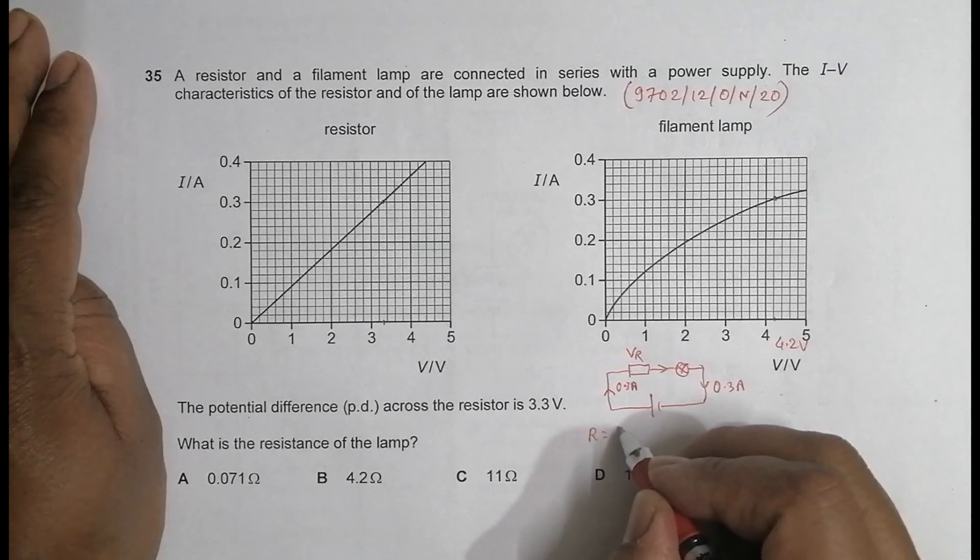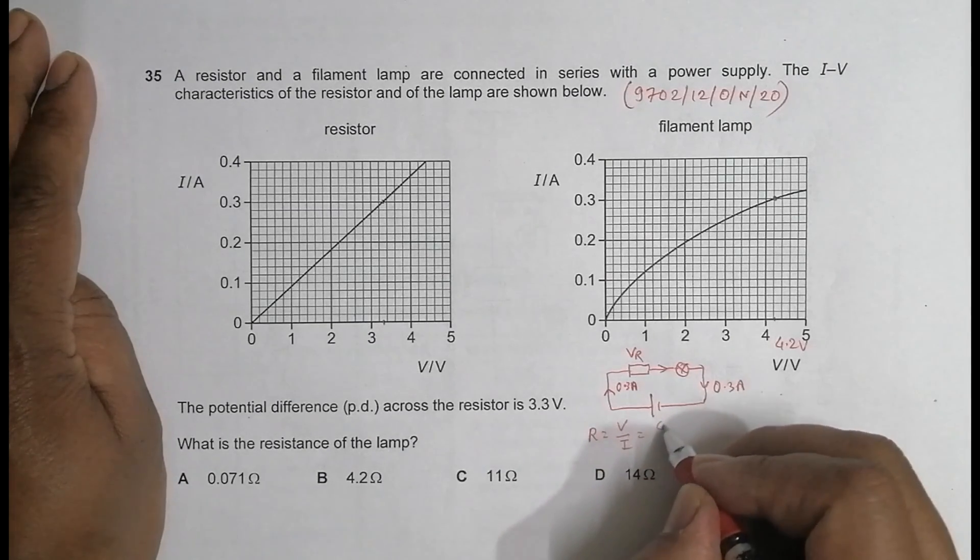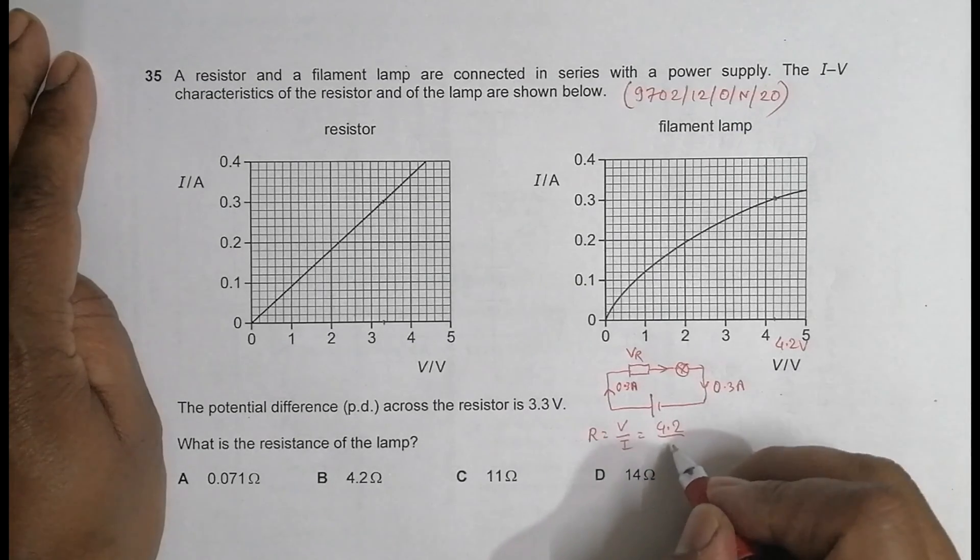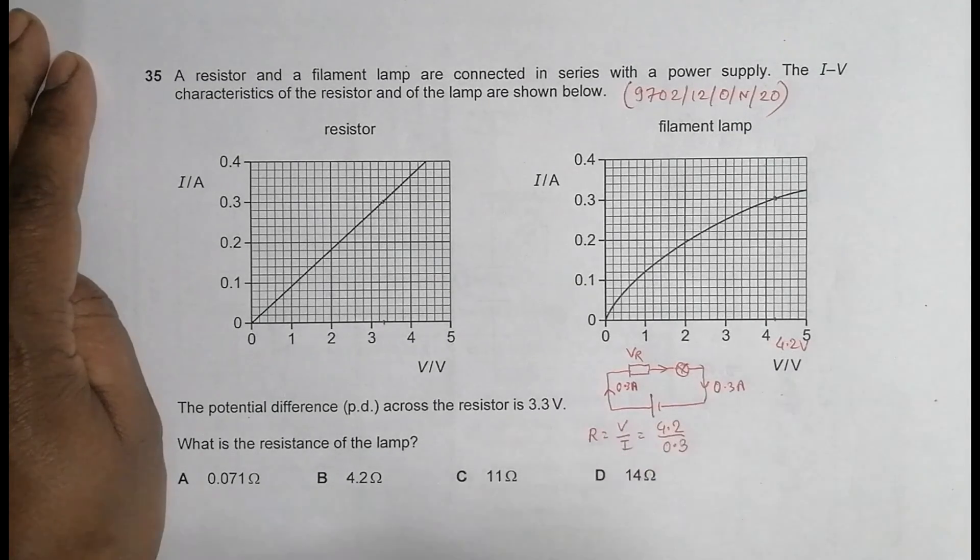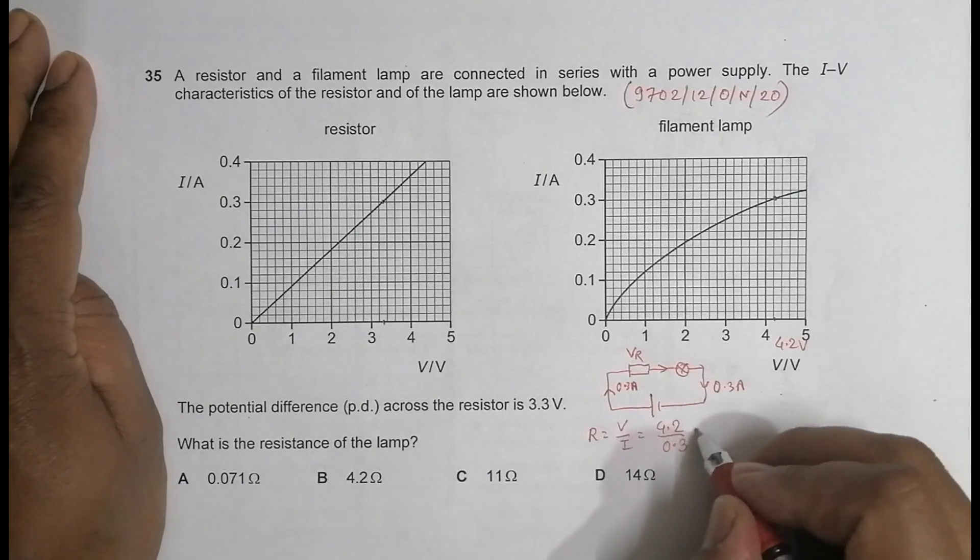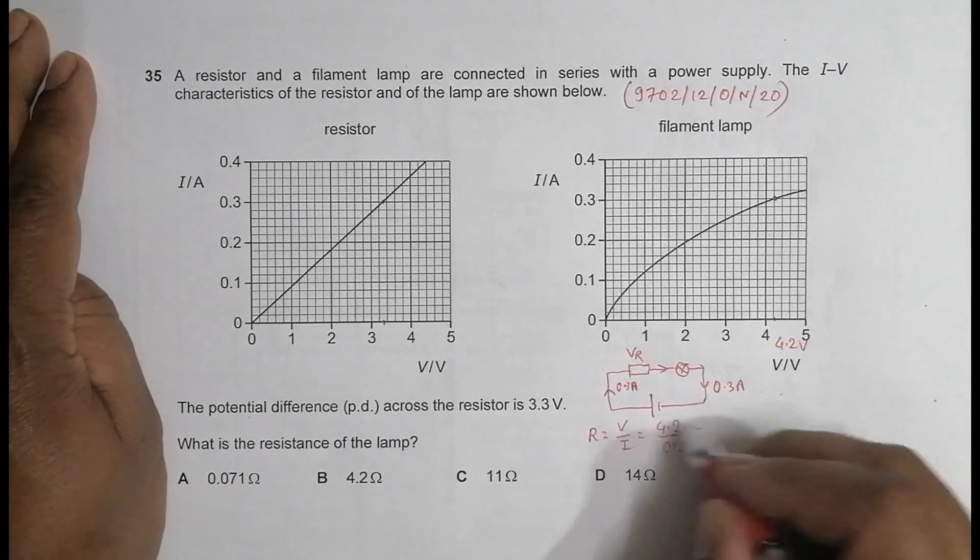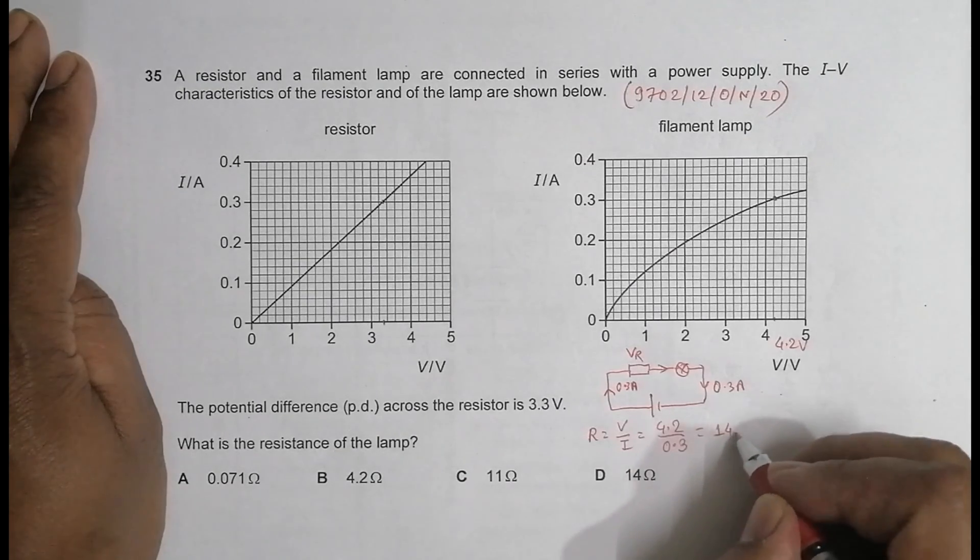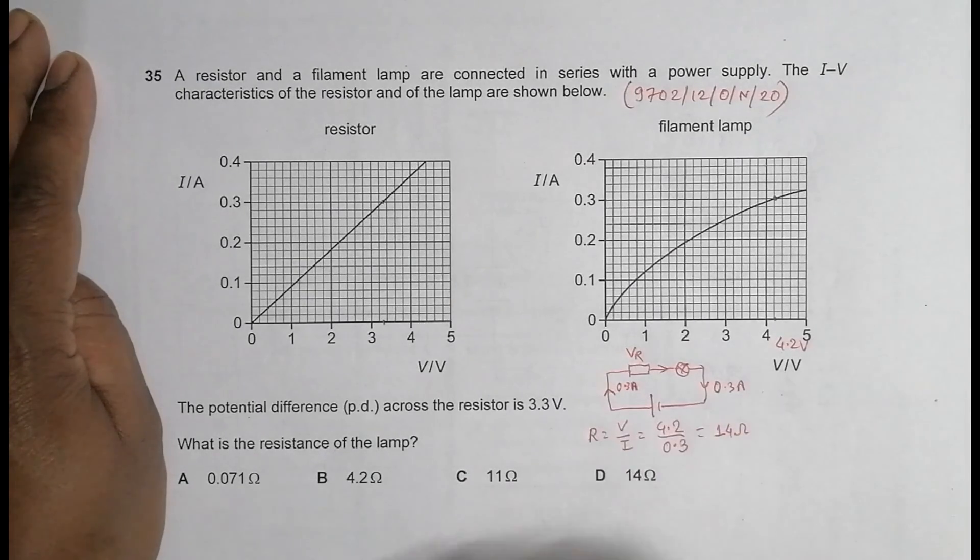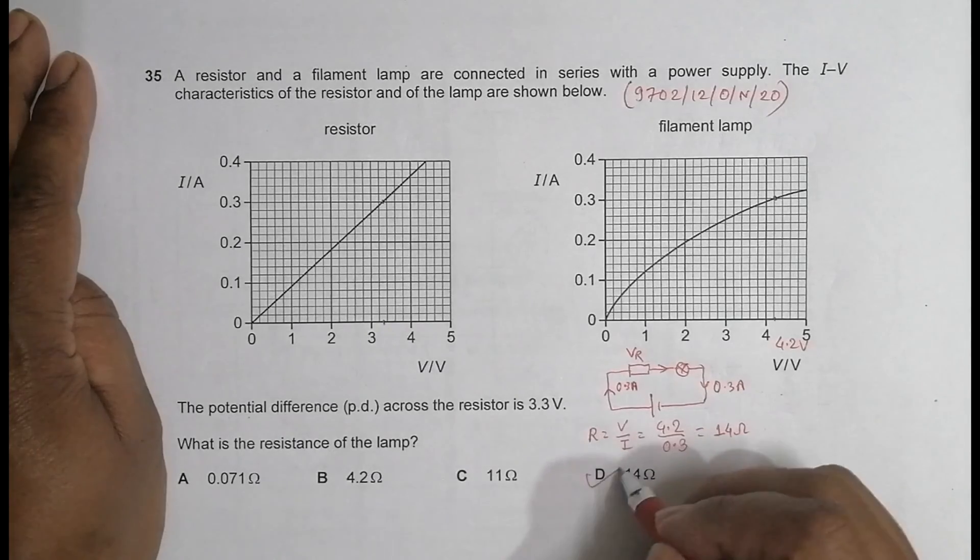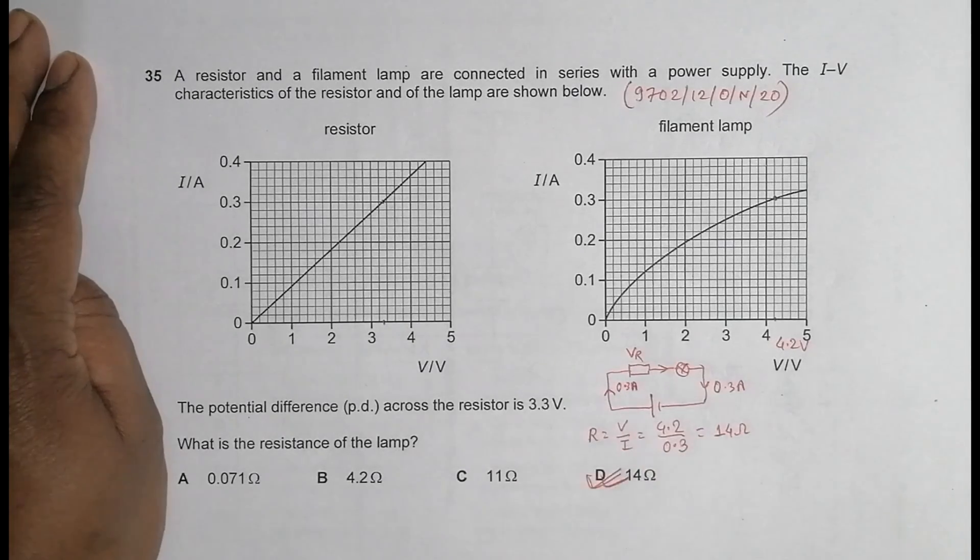So for the lamp, our resistance should be equal to the value of PD by current. That's equal to 4.2 divided by 0.3. If I do the calculator, it should be 14 ohms. So the correct choice is choice number D, 14 ohms.